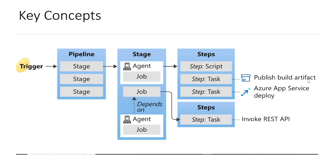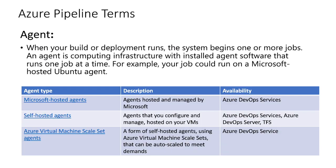We also have artifact. Artifact is a vast topic we'll discuss in detail in upcoming videos, but the one-liner is: an artifact is a collection of files or a package published by a run. You can imagine a Maven package, a NuGet package, an npm package, and so on. This gives you a high-level view of all the key concepts present in Azure Pipelines.